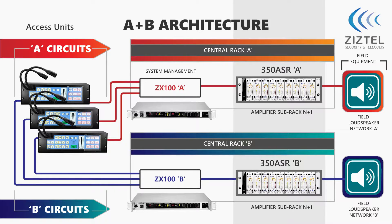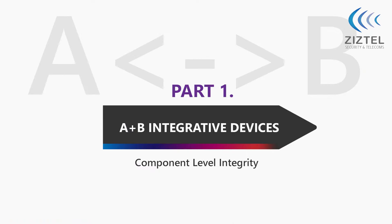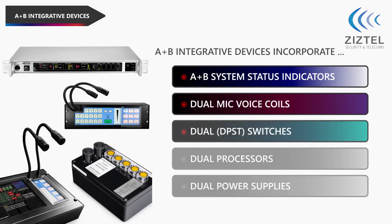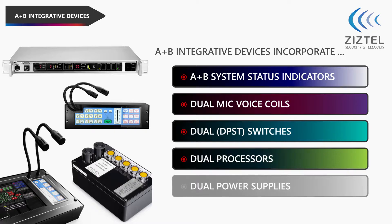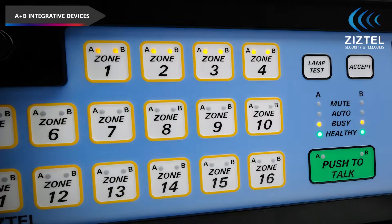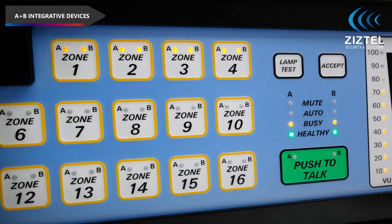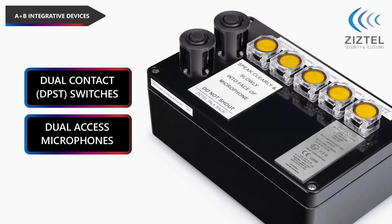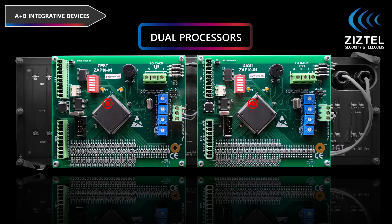A/B integrative devices feature dual circuit system indicators, dual voice coils, dual processors and power supplies. Membrane keypad button indicators provide A/B status per zone. The software layer used on our PCAP and PAUS units also displays the dual circuit status.